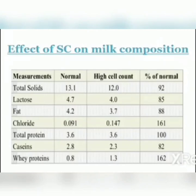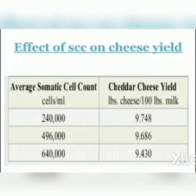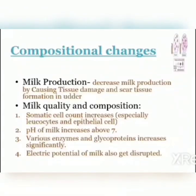Changes in somatic cell count also affect the yield of cheese, especially cheddar cheese — as somatic cell count increases per ml, the yield of cheddar cheese decreases significantly. Due to this udder disease, the pH of milk also increases and goes above 7. Various enzymes and glycoprotein concentrations in milk also increase significantly. The electric potential of milk also gets disrupted.